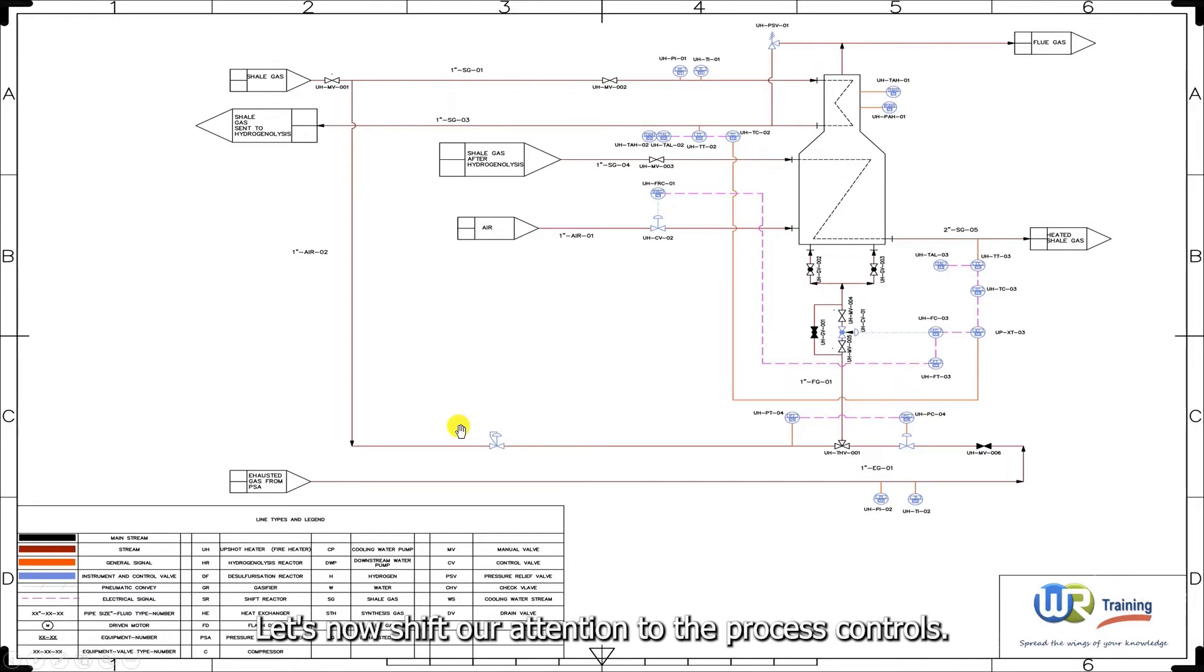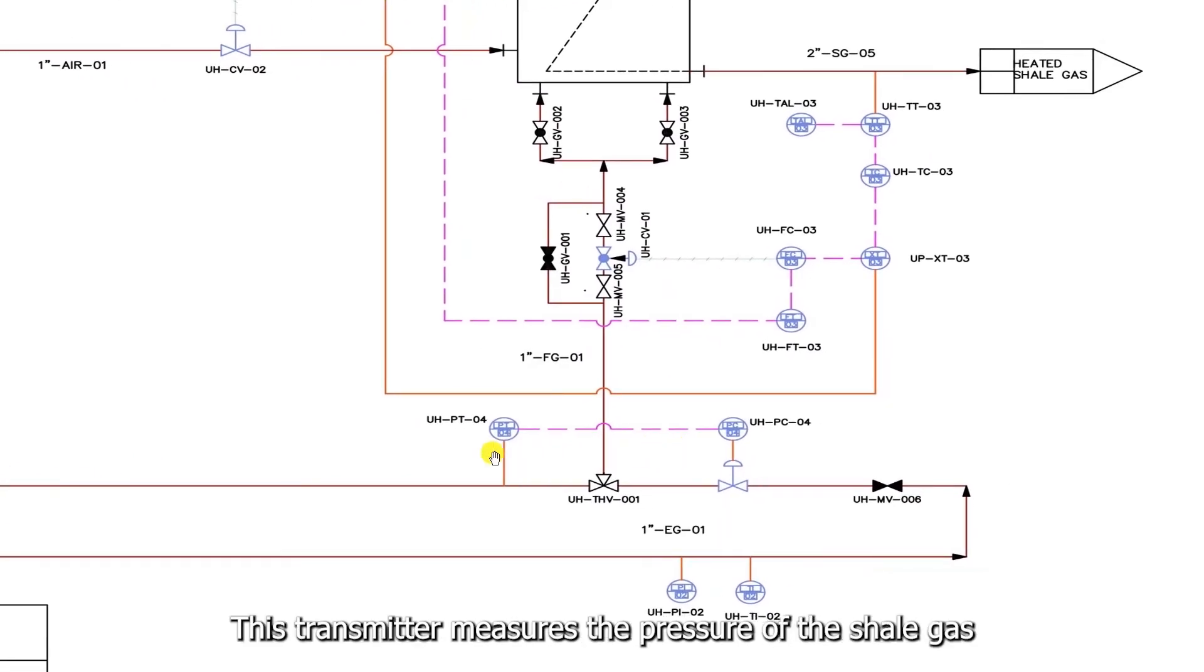Let's now shift our attention to the process controls. This piping and instrumentation diagram includes two control loops. One loop controls the shale gas and the PSA exhaust gas mixture, as seen here. And a second loop controls the flow of the gas mixture to the burners. The first control loop includes a board-mounted pressure transmitter. This transmitter measures the pressure of the shale gas before it is mixed with the PSA exhaust gas.